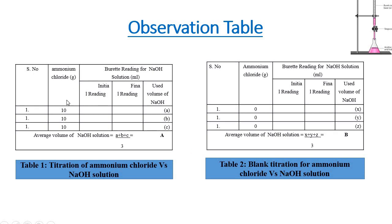We can draw the ammonium chloride amount in grams, the burette reading with initial reading, final reading, and used volume of NaOH. We can repeat the titration 3 times and then we can find the average value of NaOH solution which is the A value.